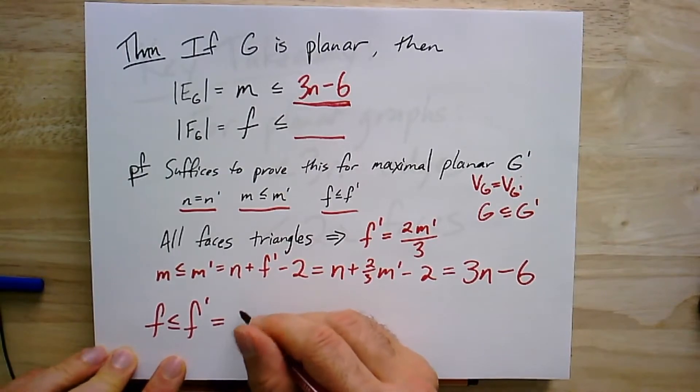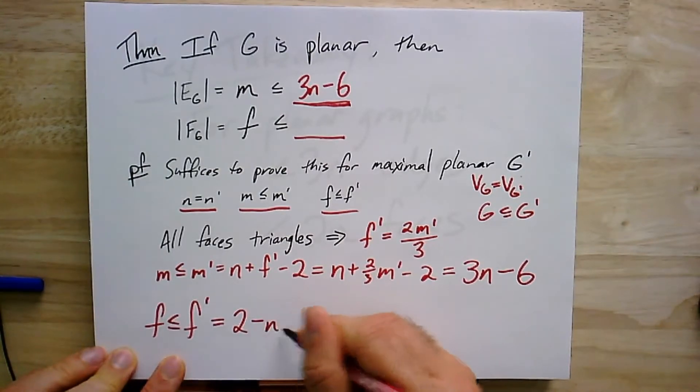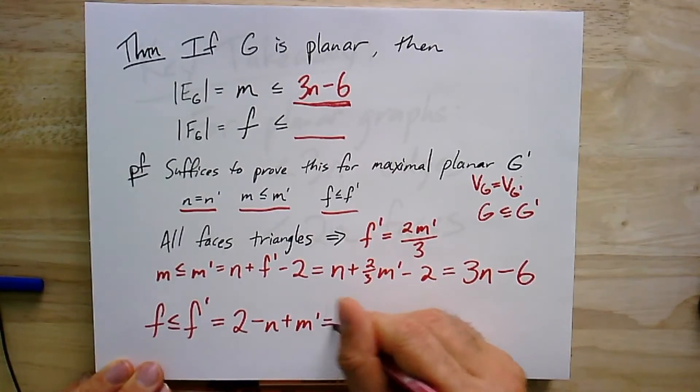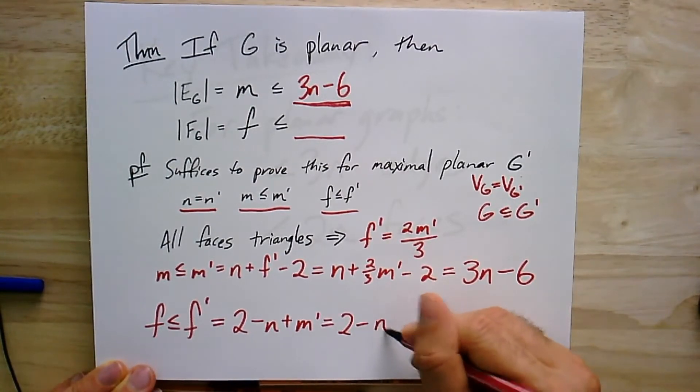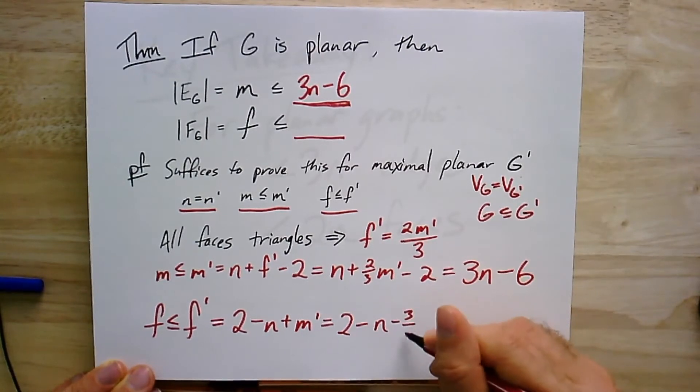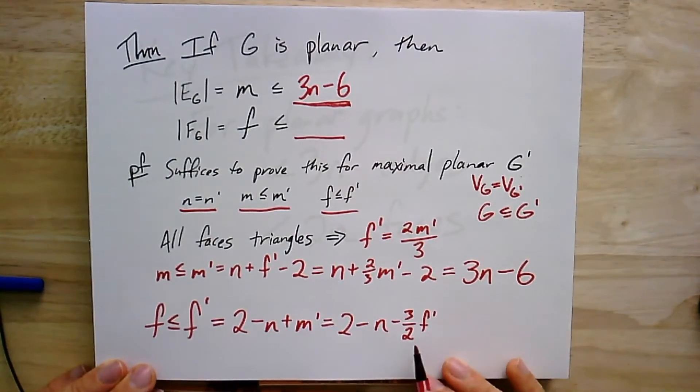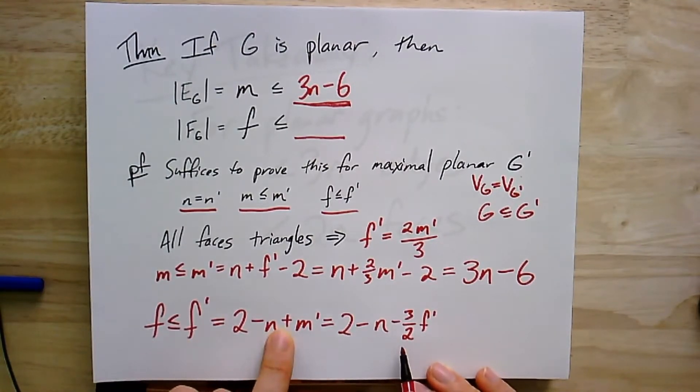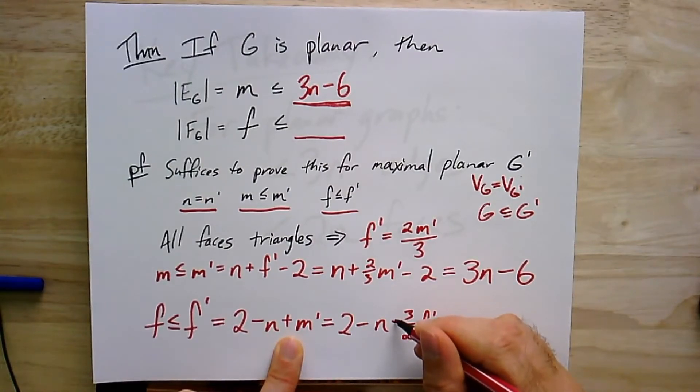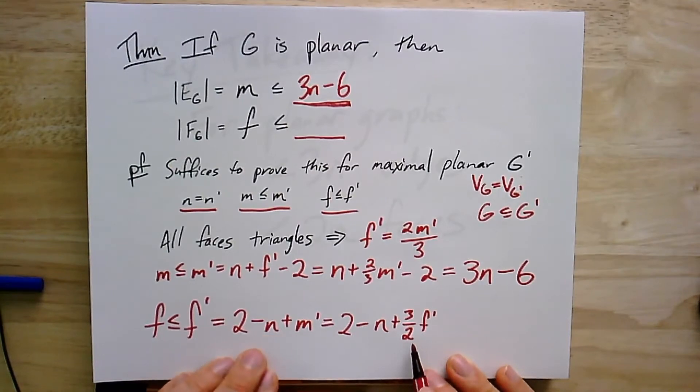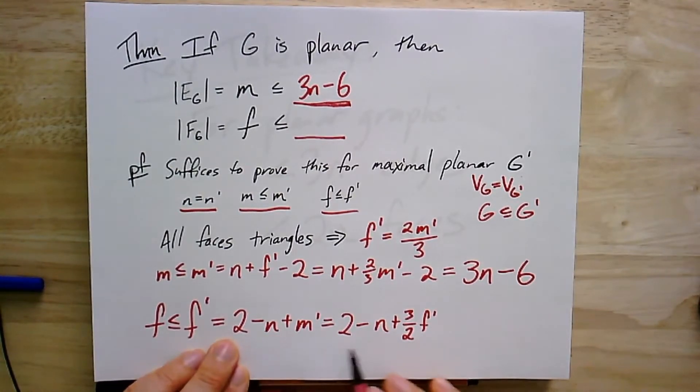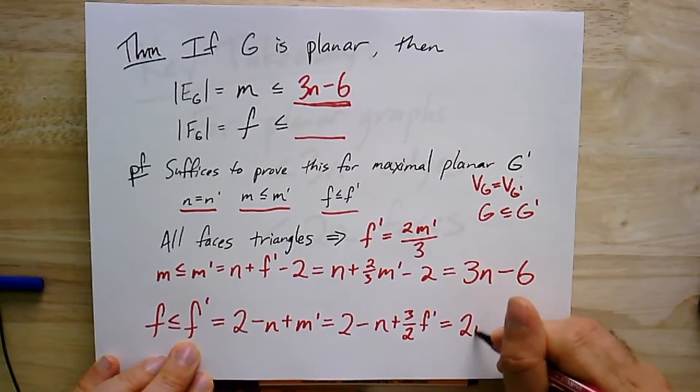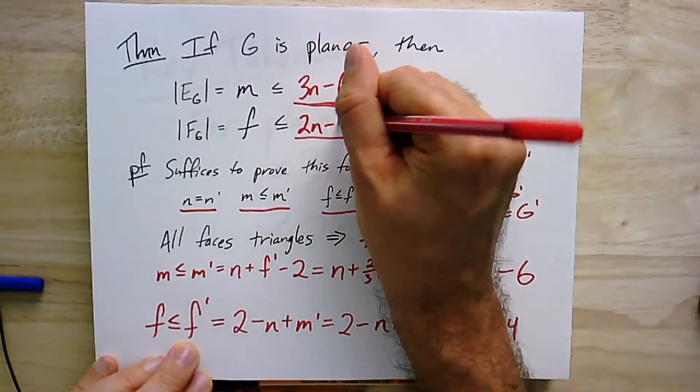I could do the same thing for faces. Euler's formula in this case, the number of faces is 2 minus n plus m', which is equal to 2 minus n plus 3/2 f'. And I do the same trick. I'm going to add 3/2. Oh, I think my signs are wrong here. Is there something funny about this? Plus m'. This should have been plus 3/2. Oh, good. So this, I'm going to subtract 3/2 f' from both sides. I'll end up with a negative 1/2 f' on the other side. Multiply the whole thing by negative 2. And I get 2n minus 4.